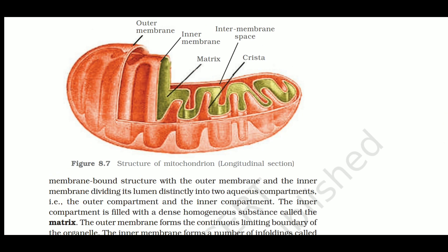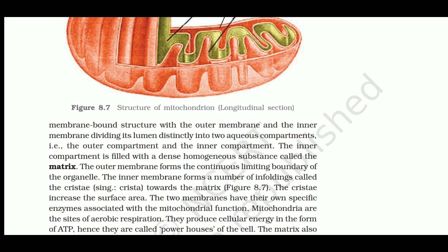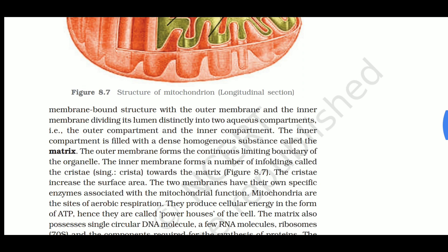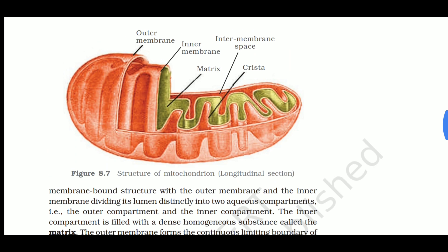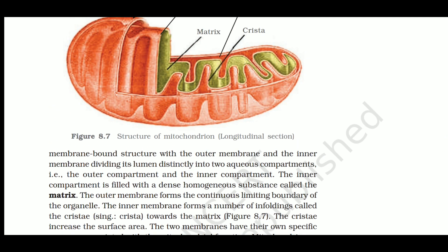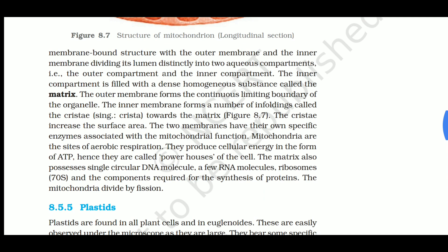The mitochondrion has an outer membrane and an inner membrane. The space between them is called the intermembrane space. The green-colored inner part is called the matrix. The infoldings of the inner membrane are called cristae. In singular it is 'crista,' in plural 'cristae.' The cristae increase the surface area towards the matrix.